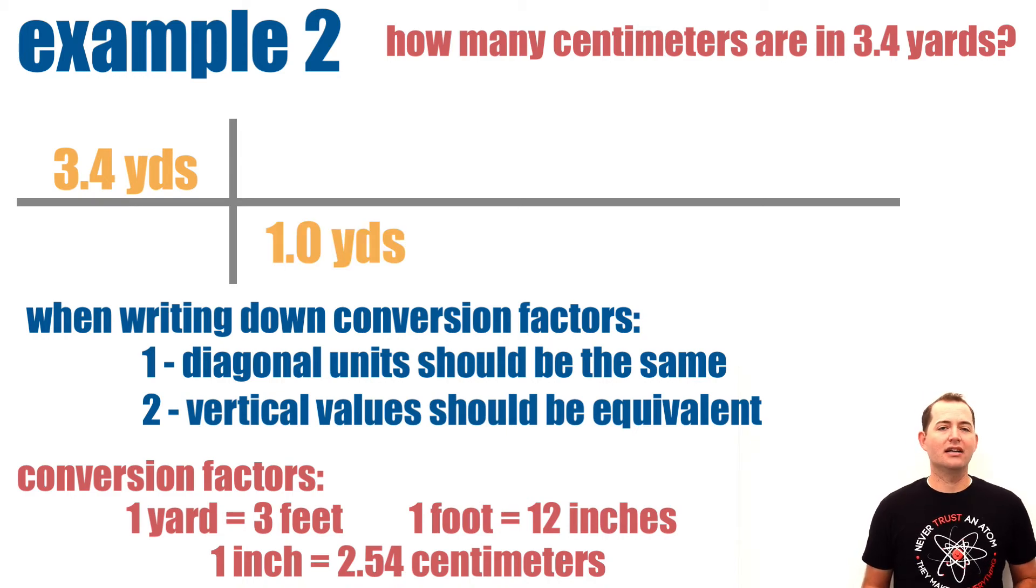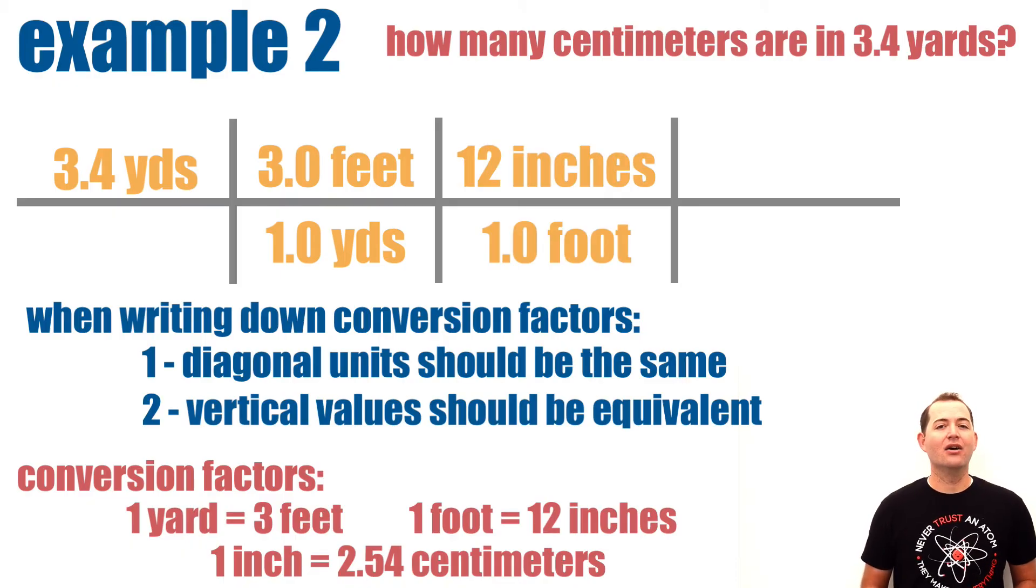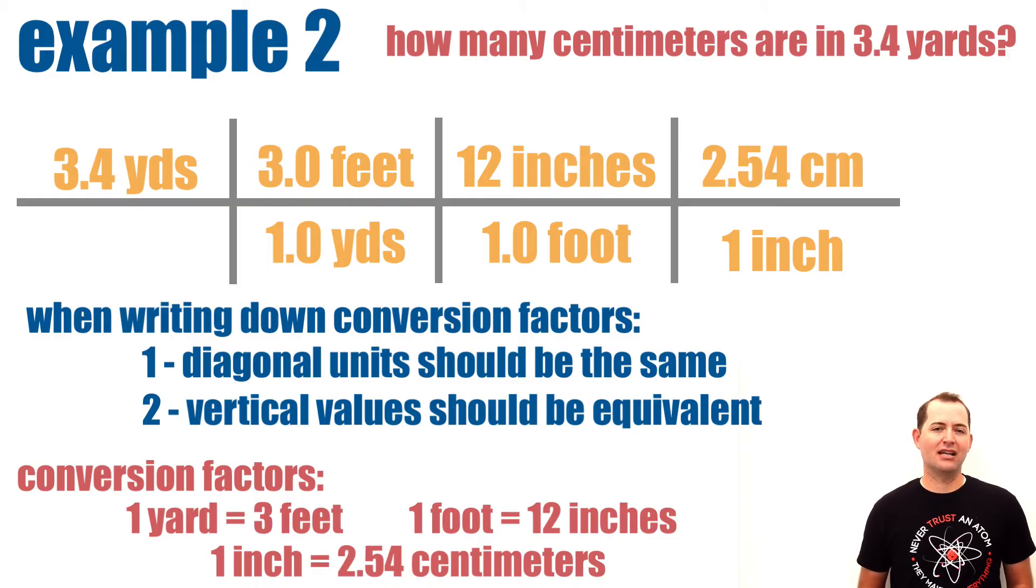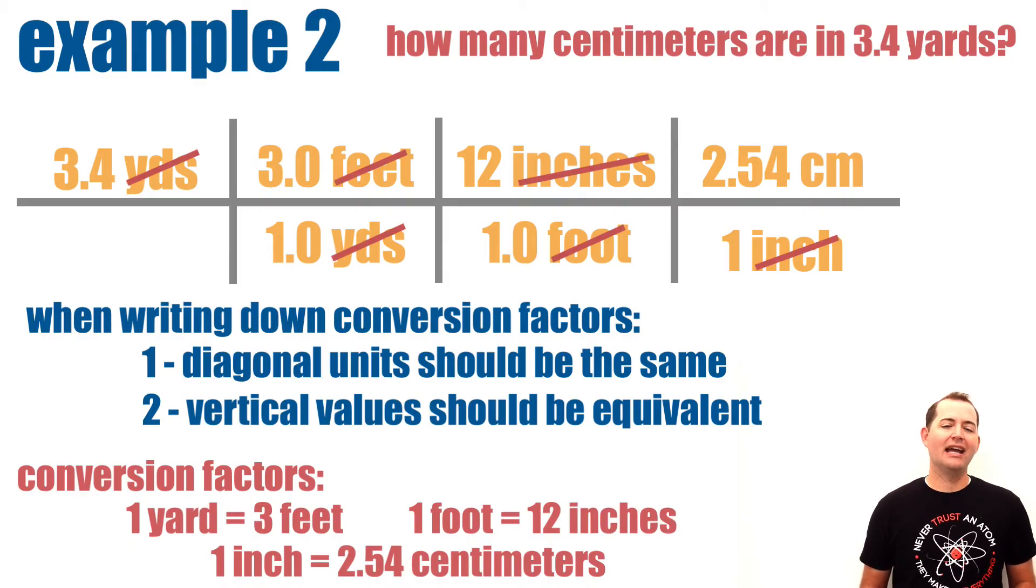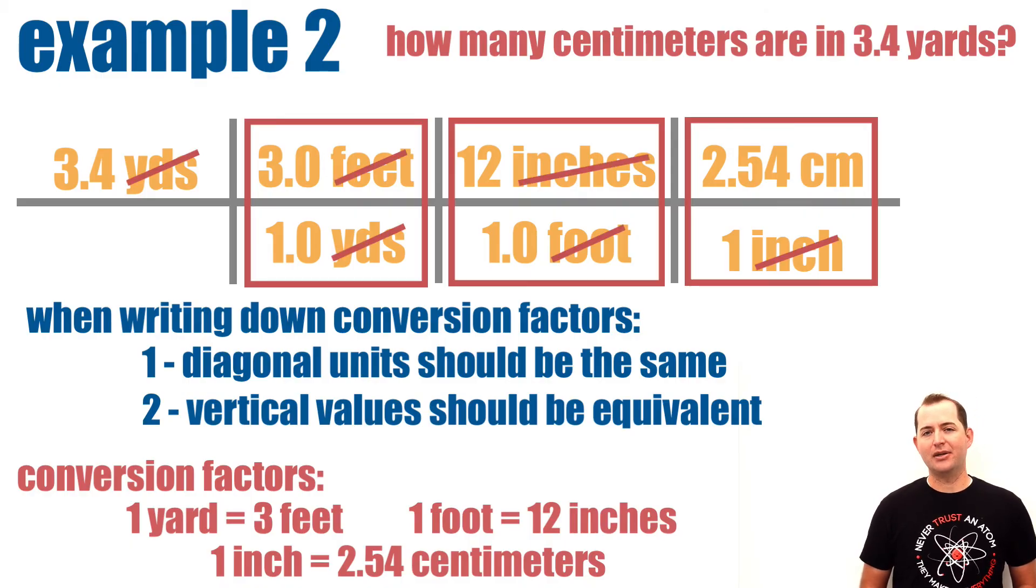First, 1 yard is equal to 3 feet. Next, 1 foot is equal to 12 inches. And finally, 1 inch is equivalent to 2.54 centimeters. With the values placed in this way, the diagonal units are the same and the vertical values are equivalent.